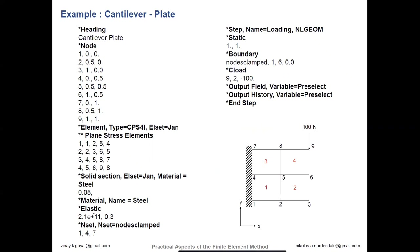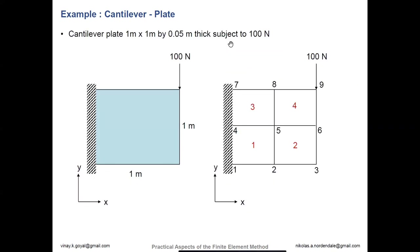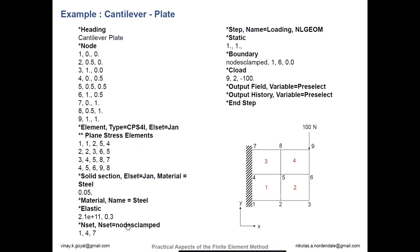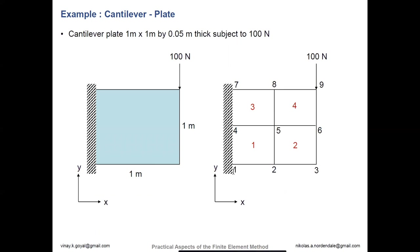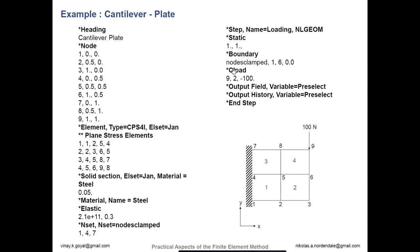Then we go into the step definition. It's a static analysis. The boundary conditions will take that set and fix all degrees of freedom because the left-hand side is fixed. Then we place a concentrated load at node 9 — load node 9 in the 2-direction, negative 100 pounds because it's in the negative Y direction. Then we provide the output requests we want for the analysis.